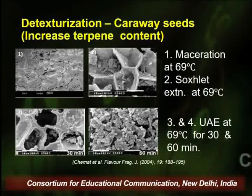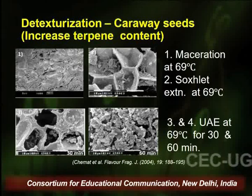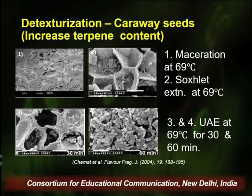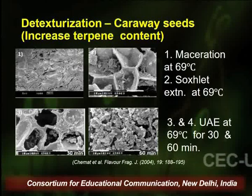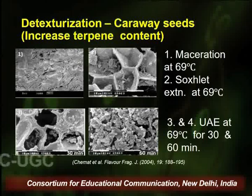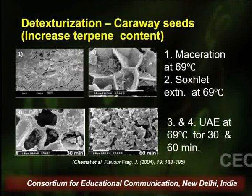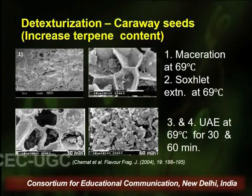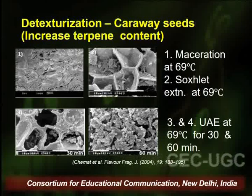This illustrates how ultrasound-assisted extraction, a modern technique, is more effective than conventional techniques. The next effect is de-texturization, produced by micro jets. This experiment was done on caraway seeds to determine terpene content. The first image shows extraction by maceration at around 70°C, and the second shows extraction by Soxhlet at around 70°C.